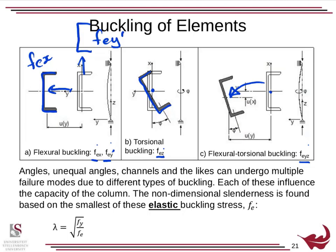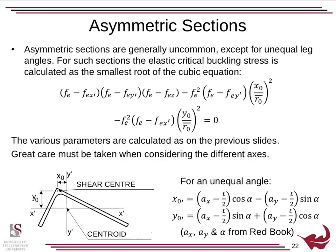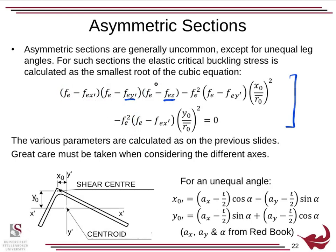Angles, unequal angles, channels and the likes can undergo multiple failure modes due to different types of buckling — each influences the capacity of columns. The non-dimensional slenderness is found based on the smallest of these elastic buckling stresses, so a column may experience any of them depending on its shape. When you have an asymmetric section — the most complex case — there is a general equation which applies to anything, any cross-section. You solve for FEx, FEy, FEz based on section properties. You will need to find the root, requiring a spreadsheet or numerical method, and you eventually solve for this elastic buckling stress.